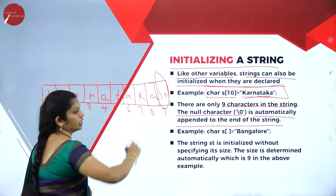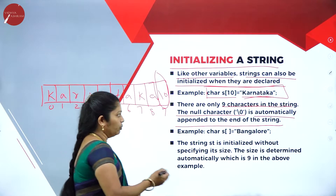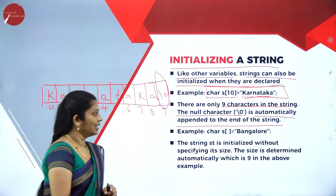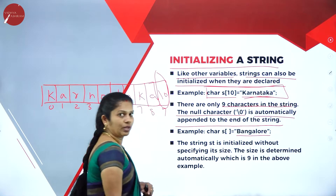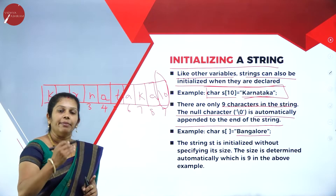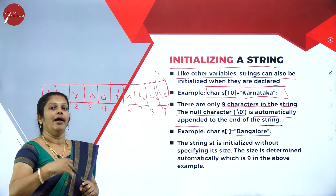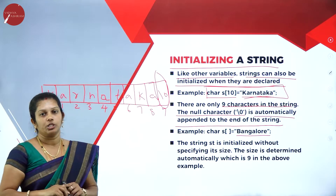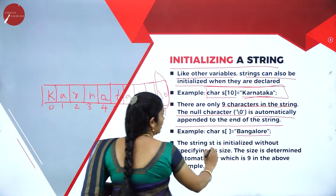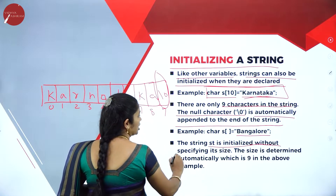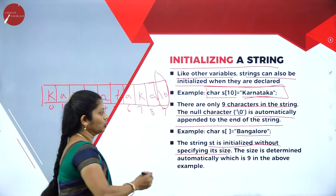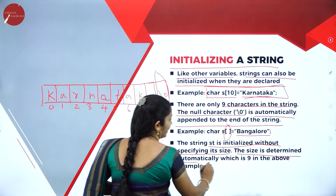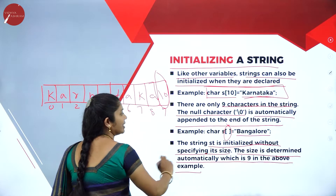For another example, char s[] — we are not mentioning any size — directly written equals 'Bangalore'. Then automatically the compiler decides how much space is required. Depending upon the value initialized, that many memory spaces are allocated by the compiler. The string st is initialized without specifying its size; the size is determined automatically, which is 9 in the above example.